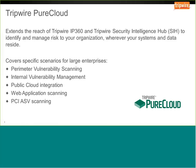For cloud environments, if you're using Amazon Web Services EC2, Pure Cloud can assess private virtual instances running in the cloud without deploying a physical or virtual appliance. Pure Cloud also supports web application scanning — the same web app 360 capability available in IP 360 is available through Pure Cloud as well. Finally, there are PCI ASV approved scanning vendor capabilities in Pure Cloud, which we'll discuss later.